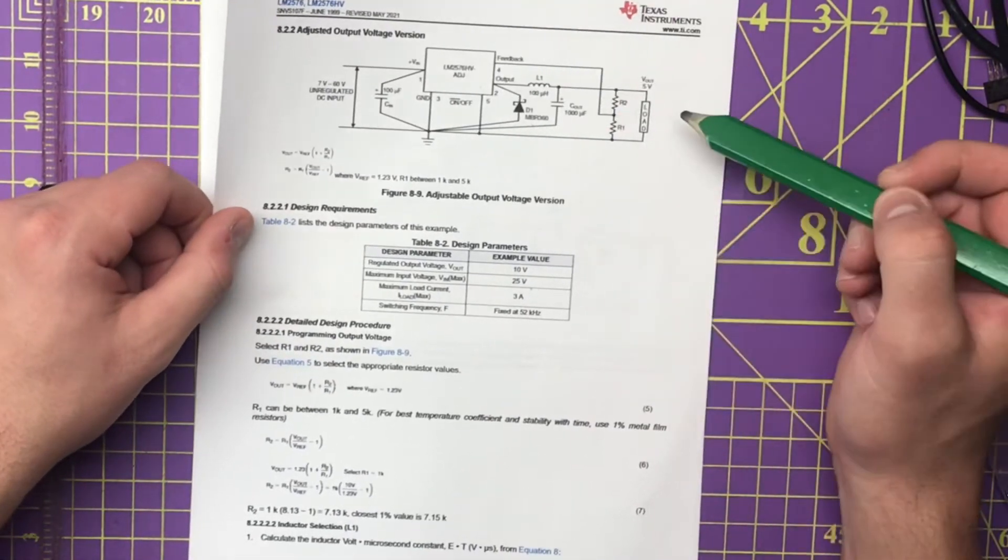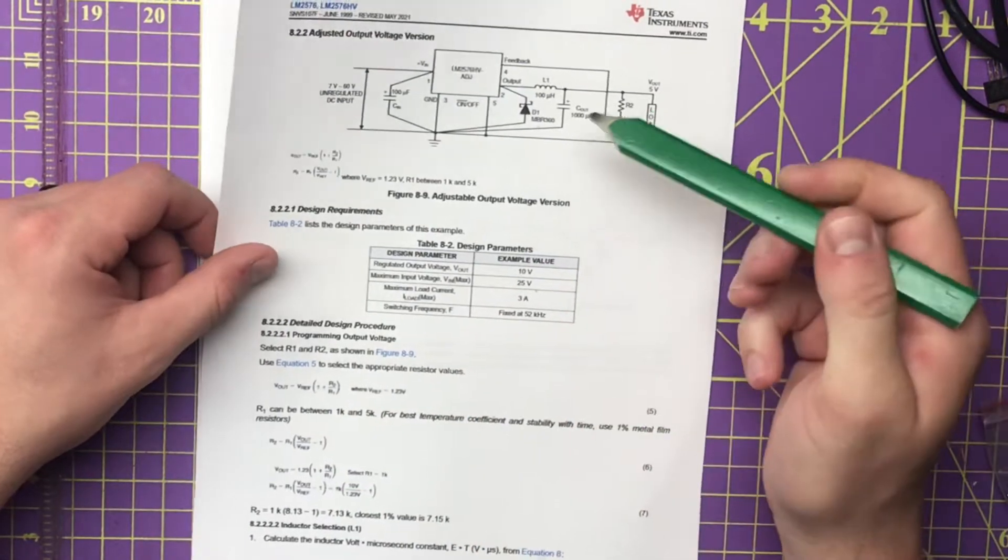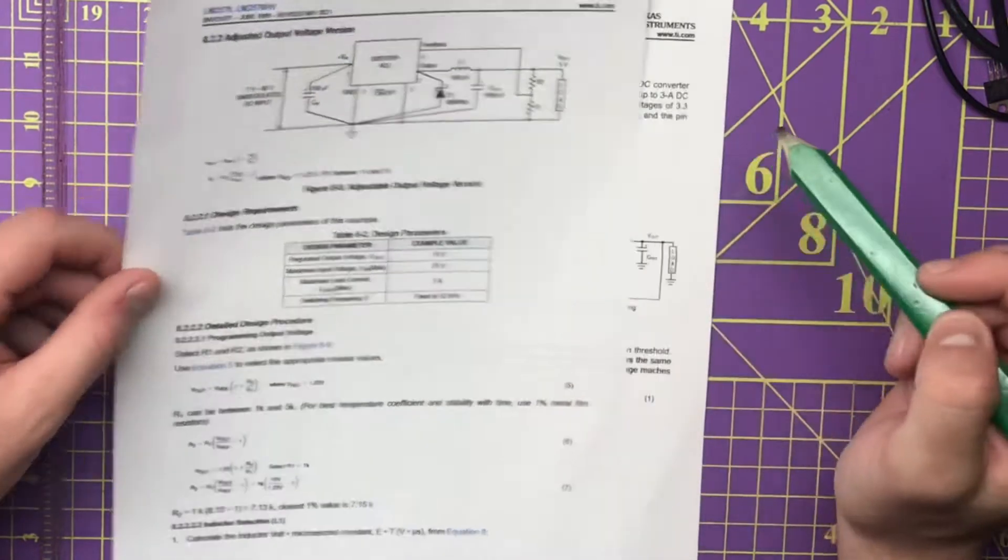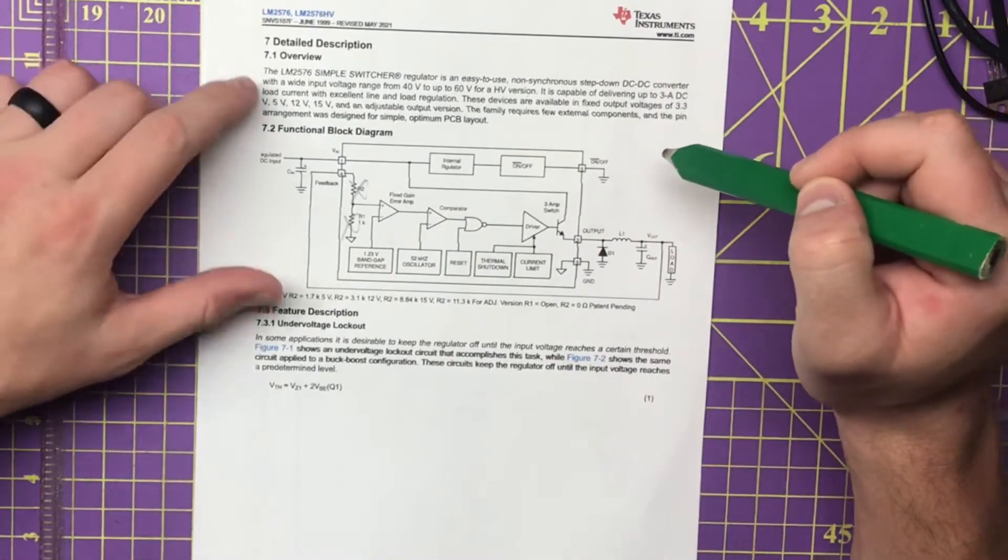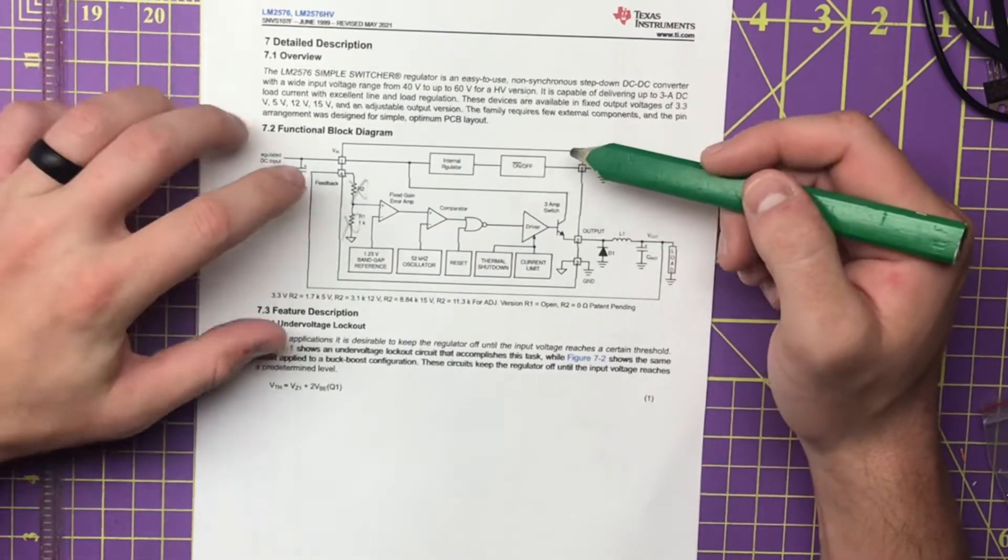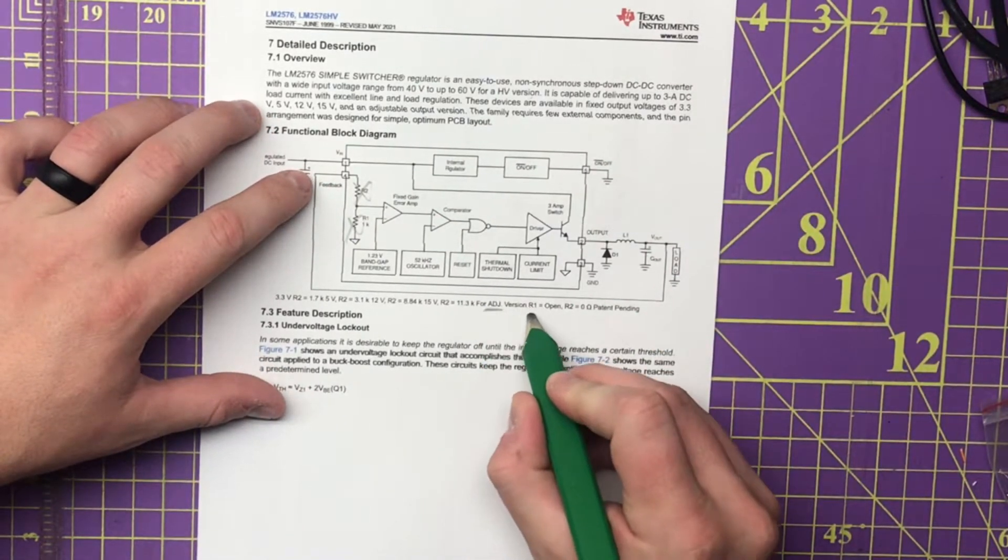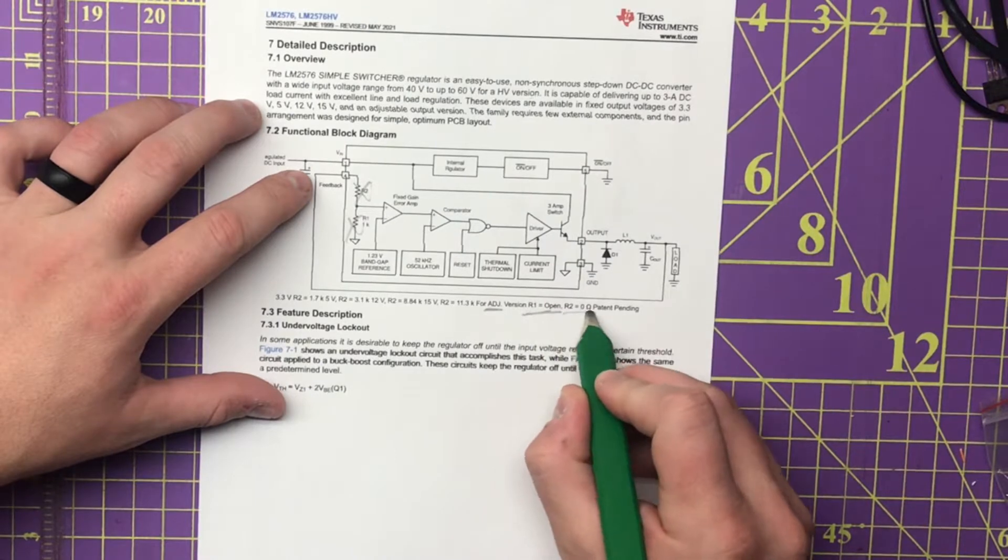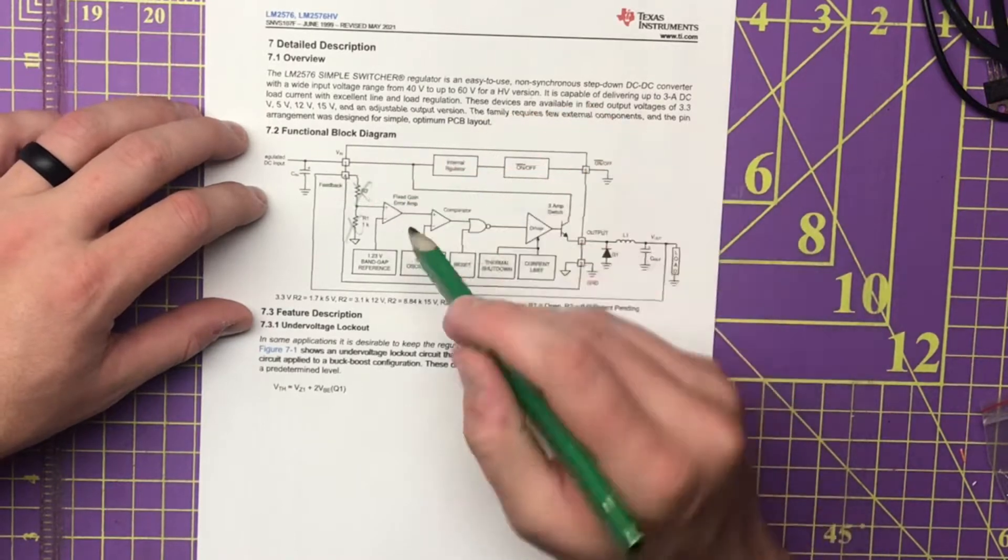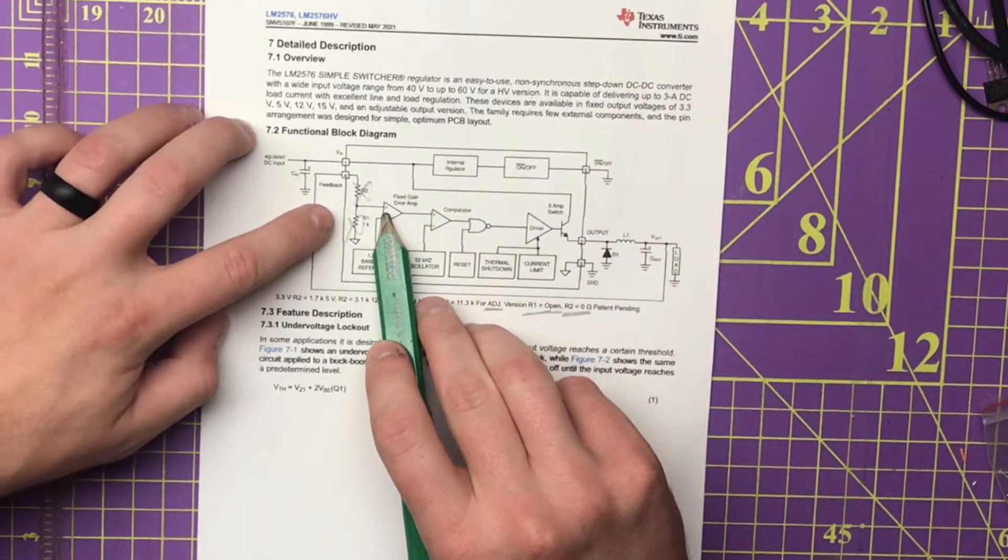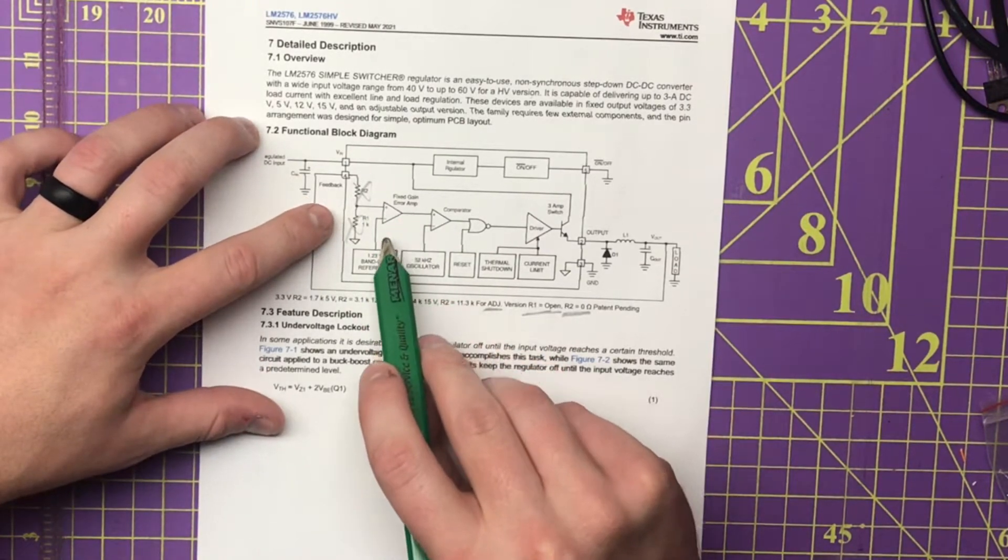They do an example here. Look at the datasheet if you want to use this. That's page 22. This one right here is the internal diagram of it. I've already crossed out R1 and R2 because I have the adjustable version. R1 is open and R2 is 0 ohms, so it's basically just directly into the non-inverting input of this fixed gain error amp.